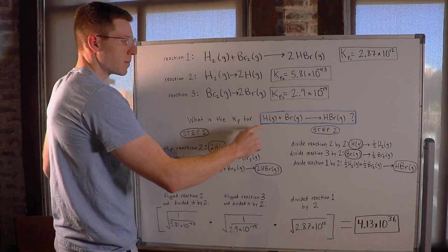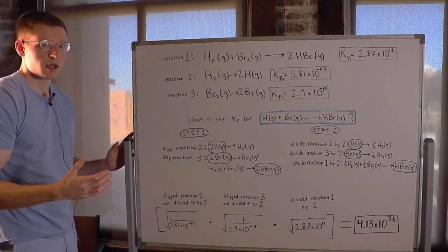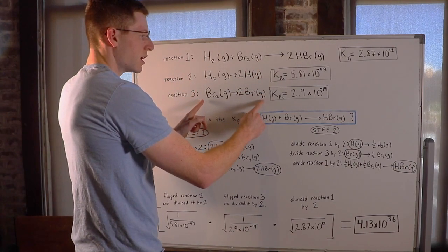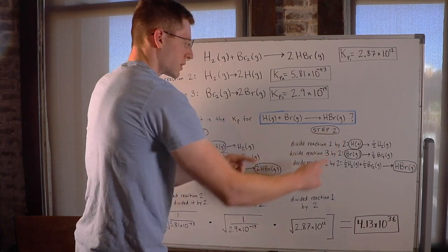And then they ask, what is the K for this reaction in blue here? So the trick is we have to somehow manipulate these equations to make them add together to look like the one in the blue box here.